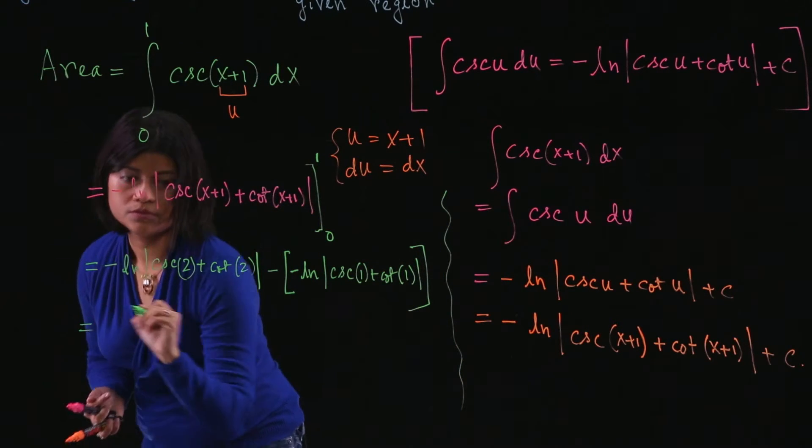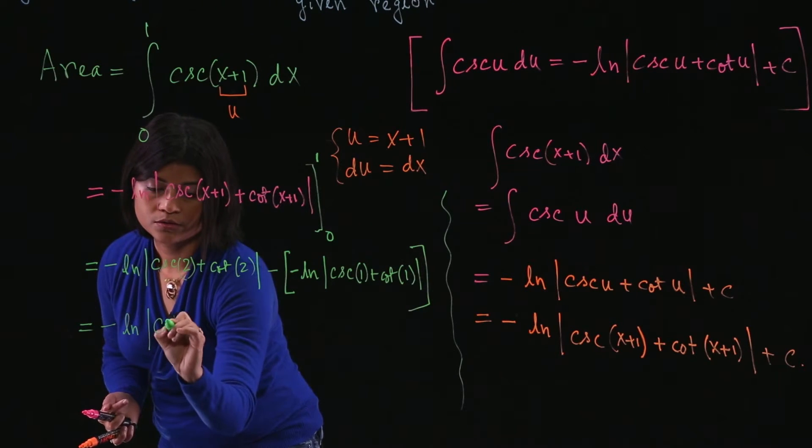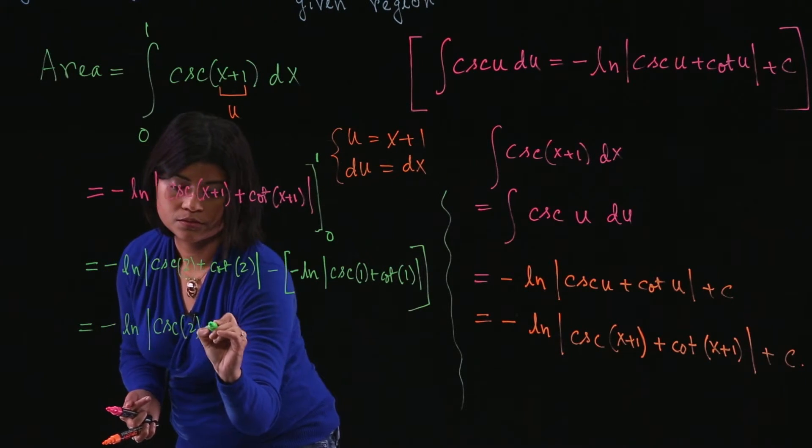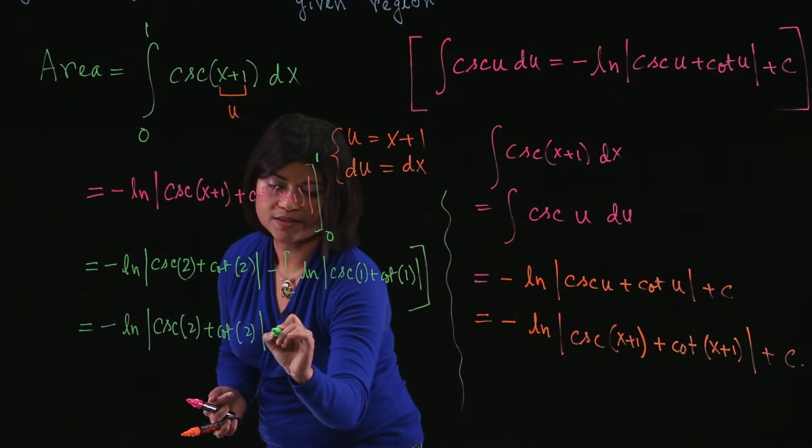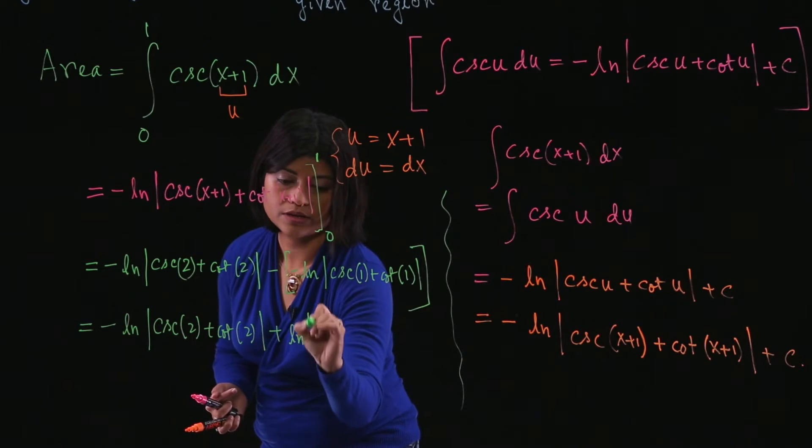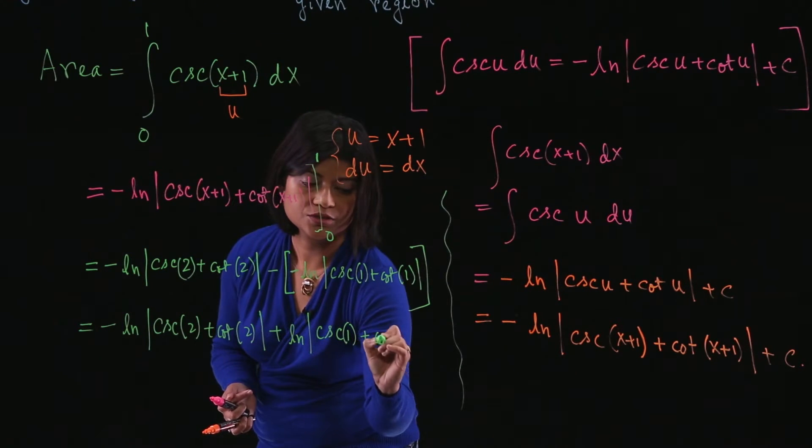So let's write one more step. We have negative natural log cosecant 2 plus cotangent 2 plus natural log absolute value cosecant of 1 plus cotangent of 1.